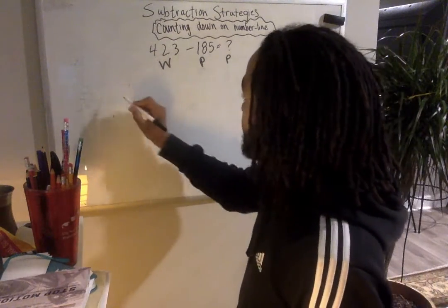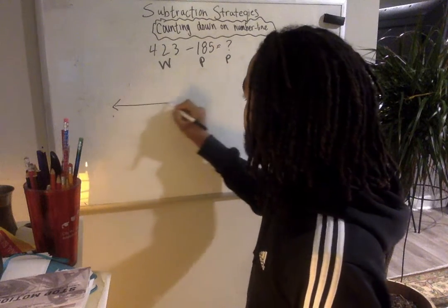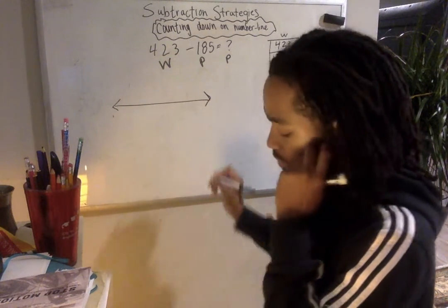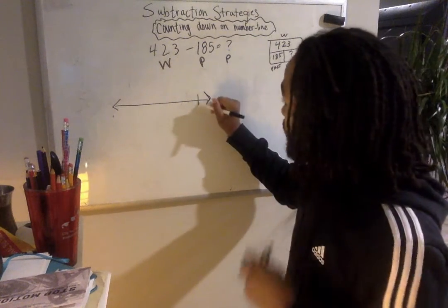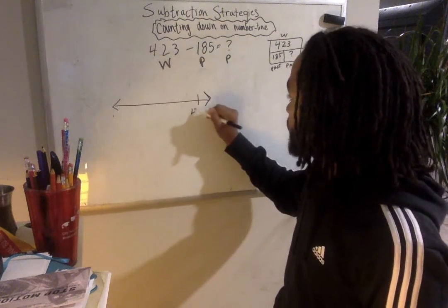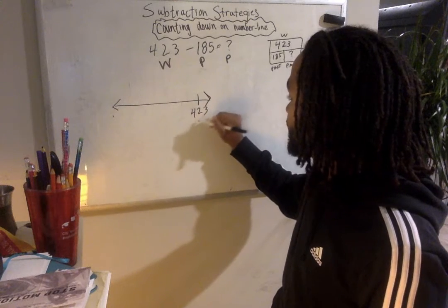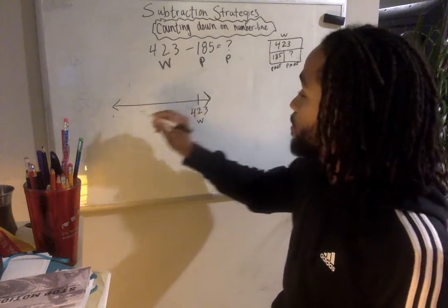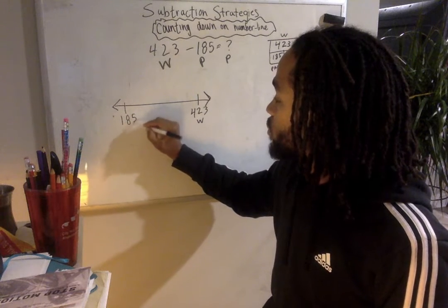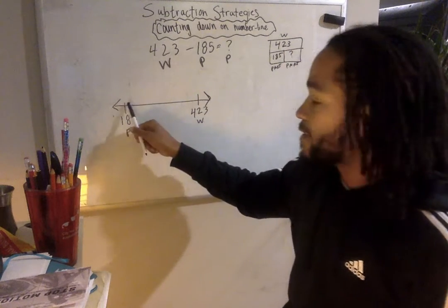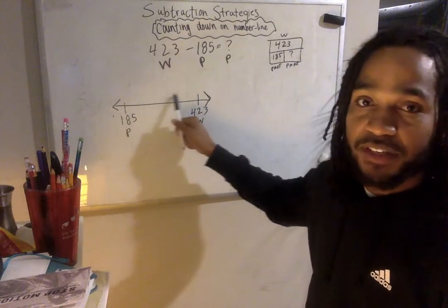I'm going to use a number line. I'm going to show you two ways you can do this. I'm first going to write my whole, which is like my end, and then I'm going to write the part, which is where I start. So I need to find the numbers in between, the space in between.